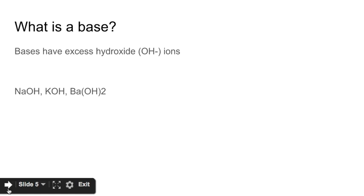So that's an acid. Now we have to compare it to a base. And a base is going to have an excess of hydroxide ions. And hydroxides are OH with a negative charge. So here's, again, some examples of bases that you would see.